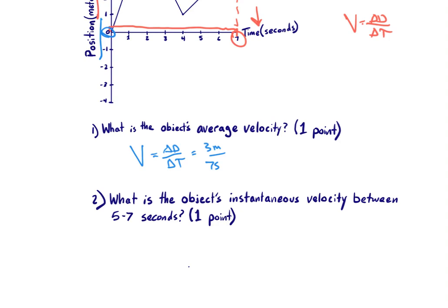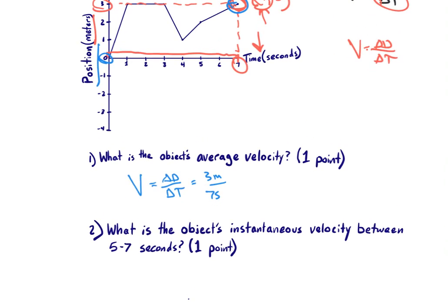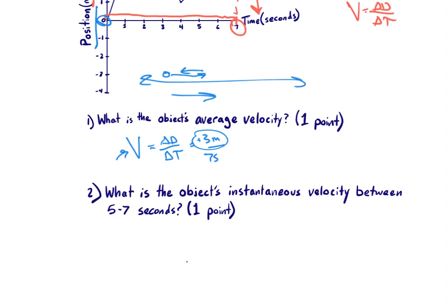Usually we would need to include a direction, but because this is only one-dimensional motion — meaning the object is moving forward and backward along a line — we know that a positive three means we're heading in the positive direction, whatever that may be. So the correct answer for number one was three meters over seven seconds as our average velocity.